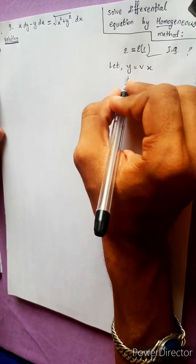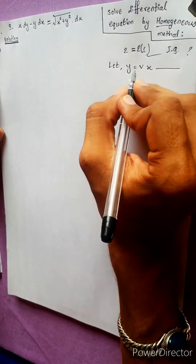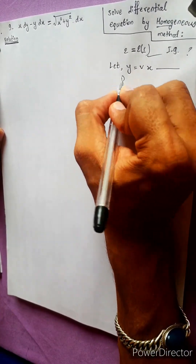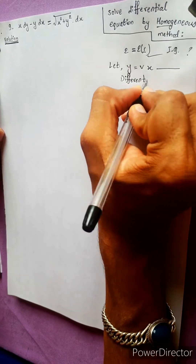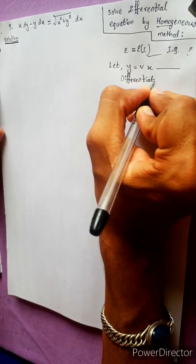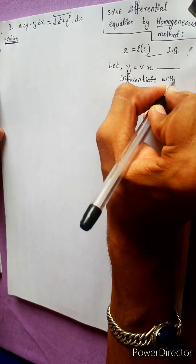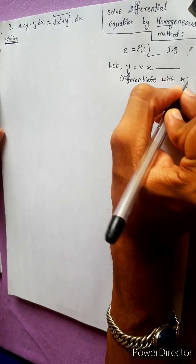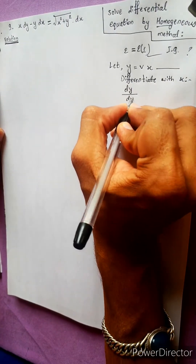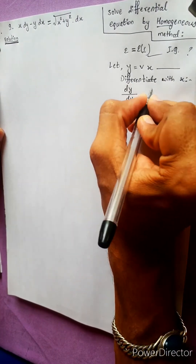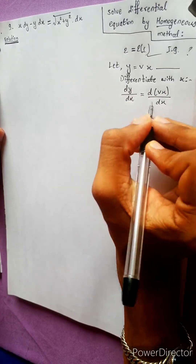Let y equal to vx. We will differentiate both sides with respect to x. dy by dx equals to d(vx) by dx.